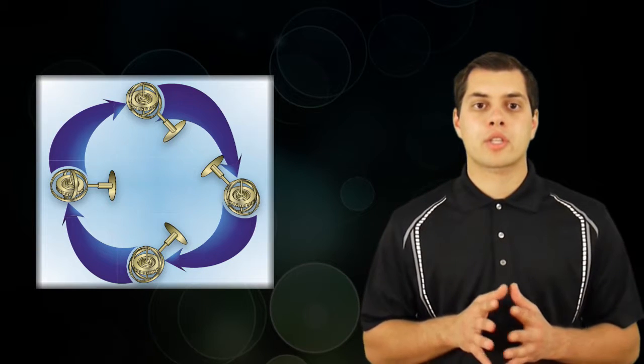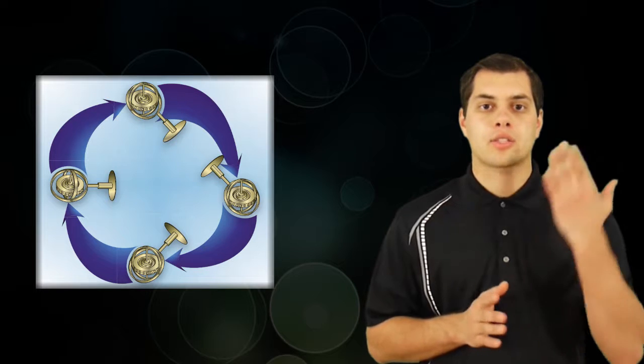First of all, gyroscopes are fast-spinning discs, so let's talk about a bike wheel. If you get a bike wheel spinning fast enough, it will have what we call rigidity in space, meaning it will want to keep spinning in that same direction, in that same plane of rotation.